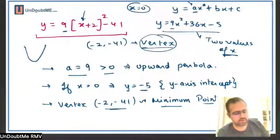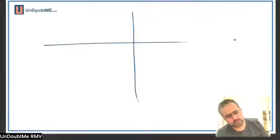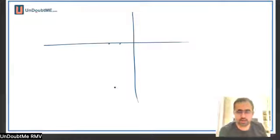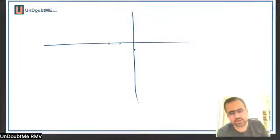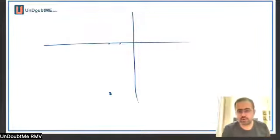Let me start with the vertex. Tentatively negative 2 comma negative 41 is way down — you can take a scale of 5. It doesn't matter; this is just a rough graph. It need not be exactly negative 41.